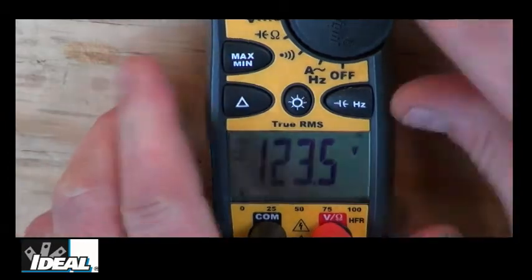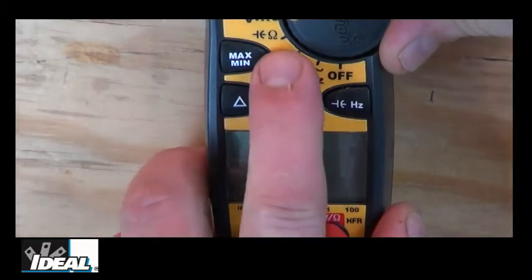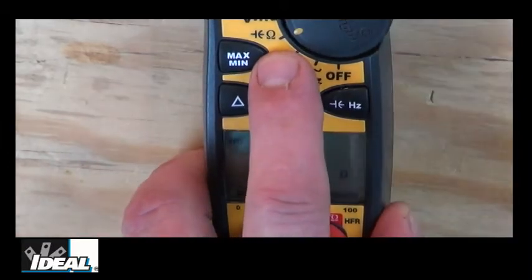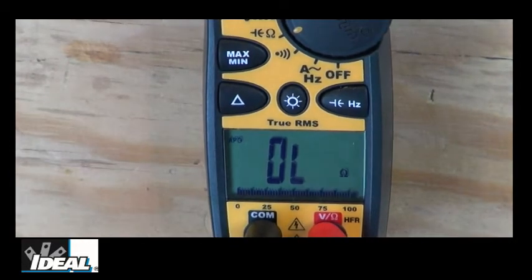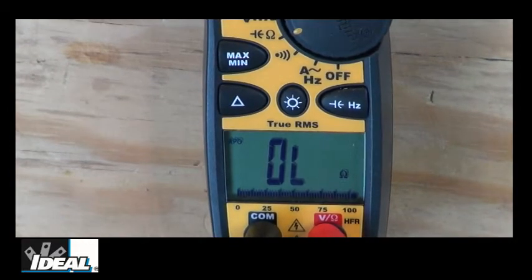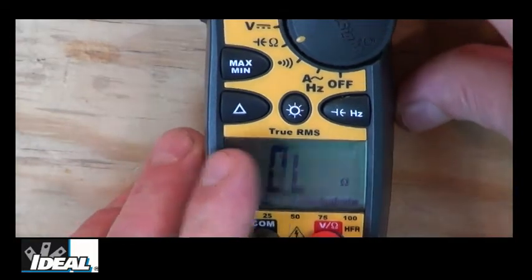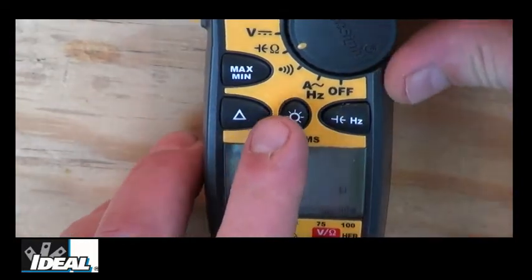Now the tester obviously does volts DC as well. And the little omega symbol indicates we'll do resistance when we want to measure the resistance in a circuit. Right next to it, that symbol is for capacitance. So the tester would measure capacitance if we needed it to as well, for like a start capacitor.